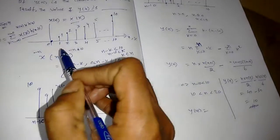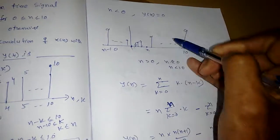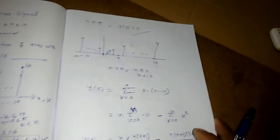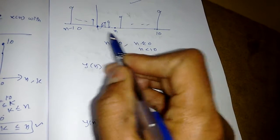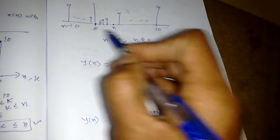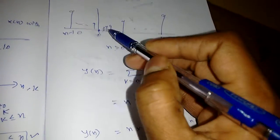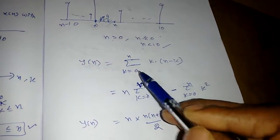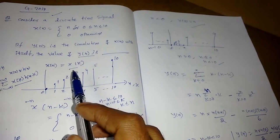Now we fix x[k] and slide x[n-k]. When n < 0, there is no common overlap, so y[n] = 0. When 0 < n < 10, the sliding signal moves inside the range, and the common region is k = 0 to n.